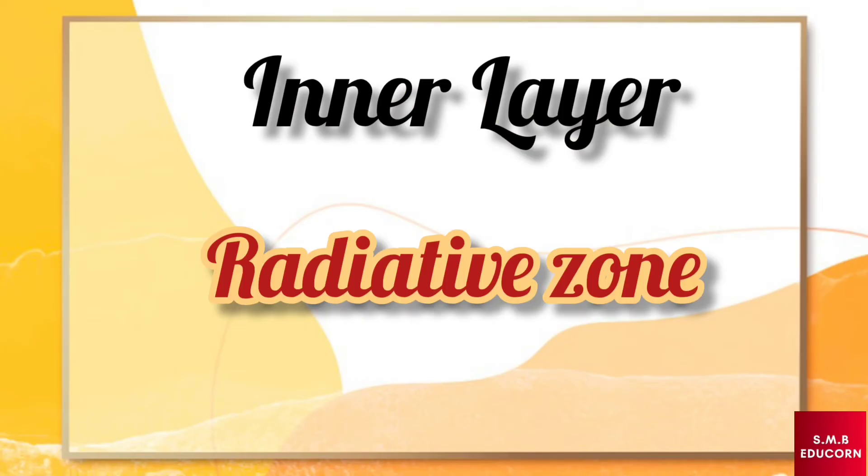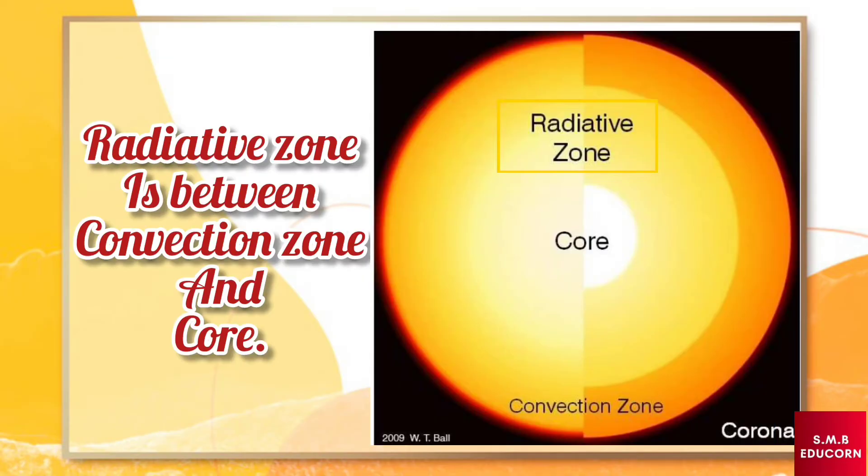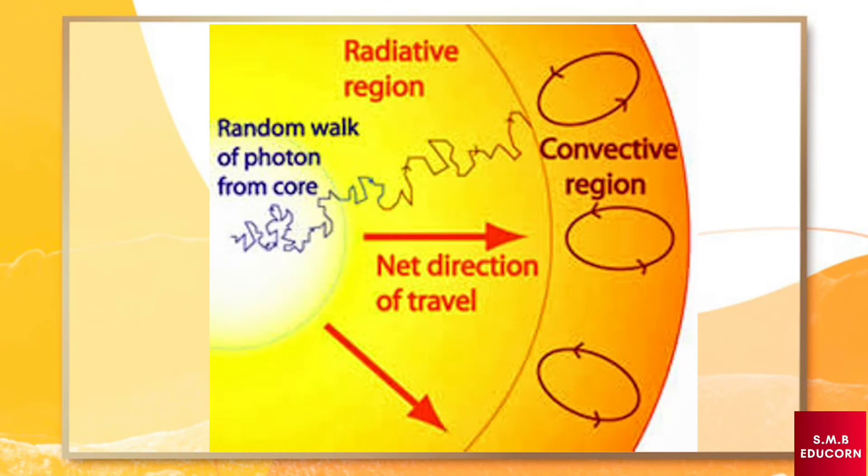After convection zone, we have radiative zone. This zone is between the core and the convection zone. The temperature in the zone range from 2 to 7 million degrees Celsius. The energy created in the core of the sun travels through this region in the form of light or you can say radiation.